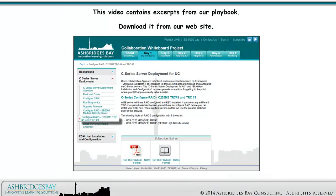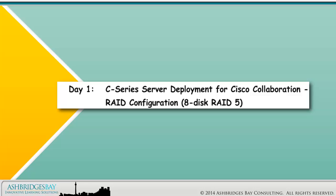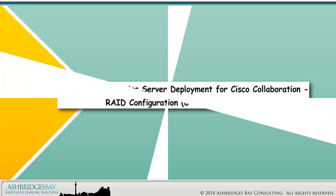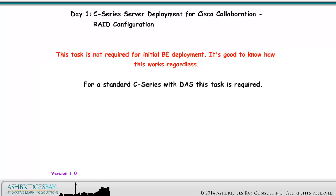This video contains excerpts from our playbook. Download it from our website. Welcome to our drawing, Day 1, C-Series Server Deployment for Cisco Collaboration RAID Configuration, 8-Disc RAID 5. This task is not required for initial BE deployment, but it's good to know how to do this anyway. For a standard C-Series with DAS, this task is required.